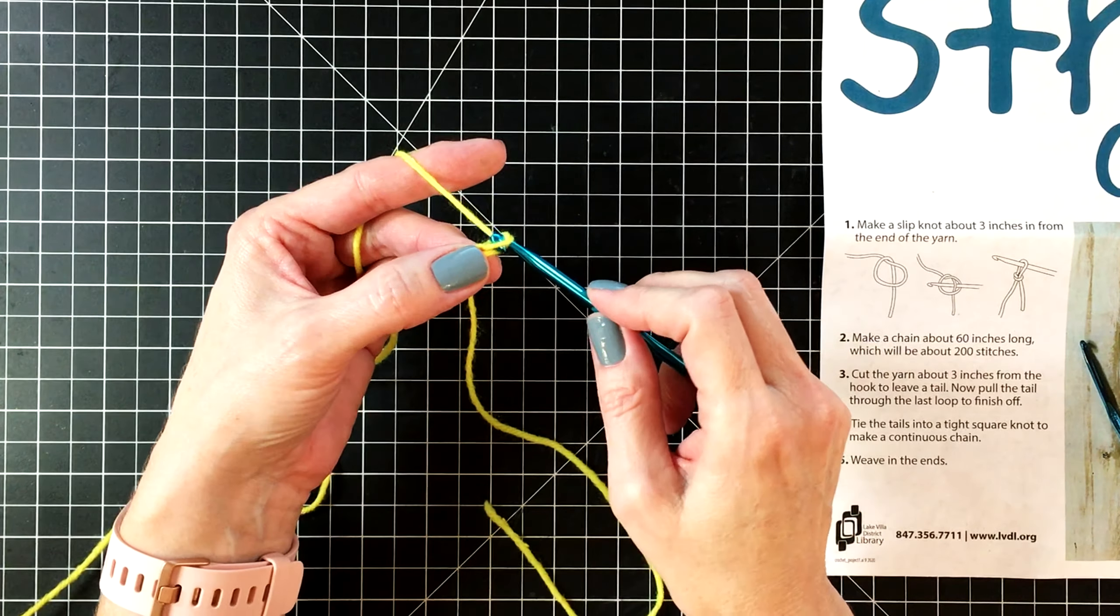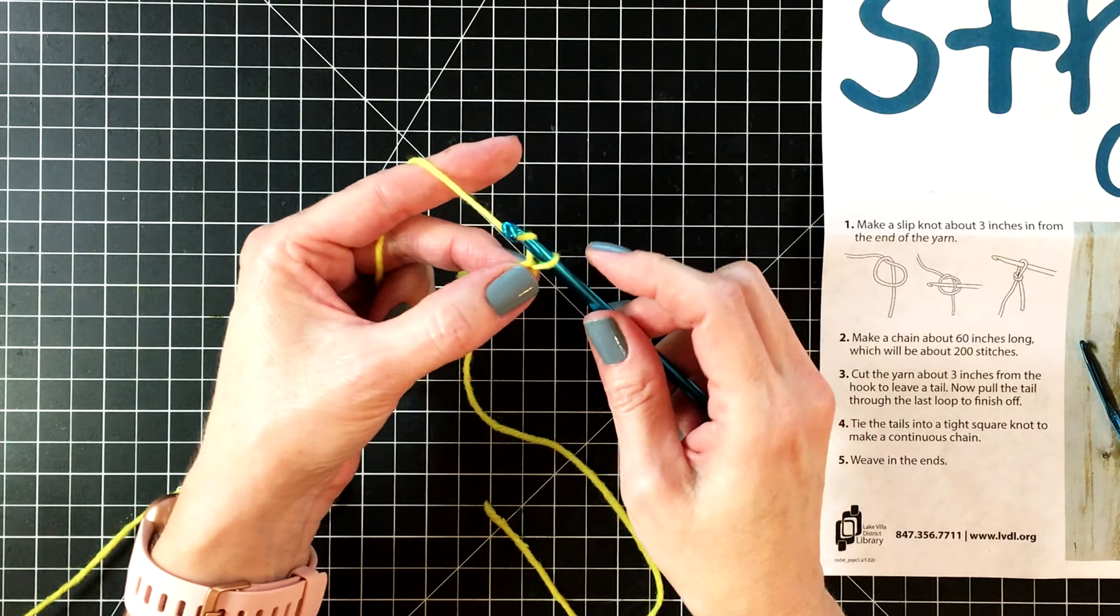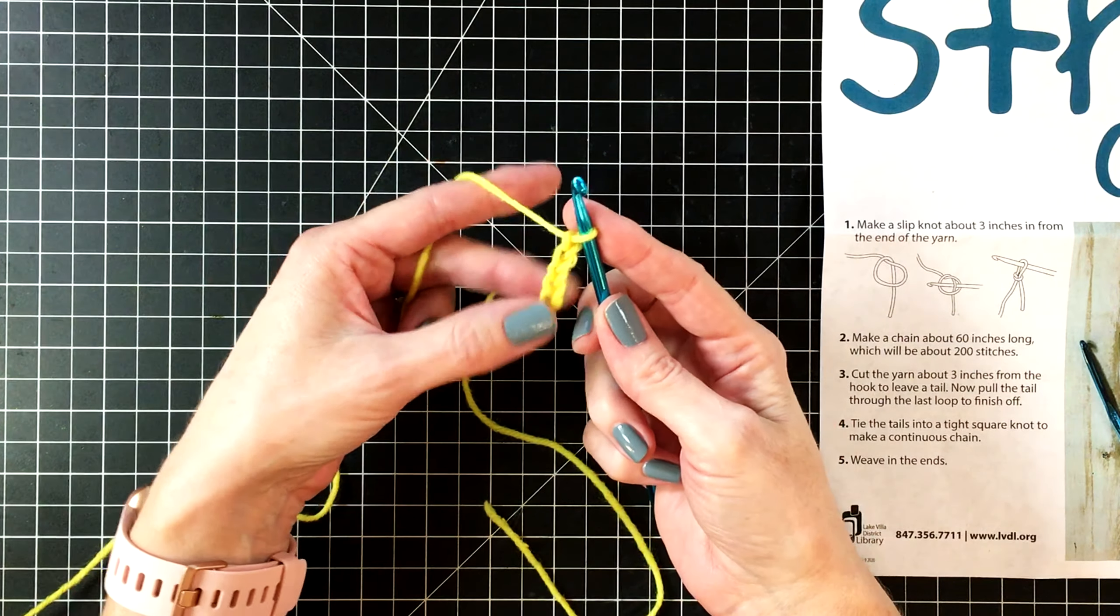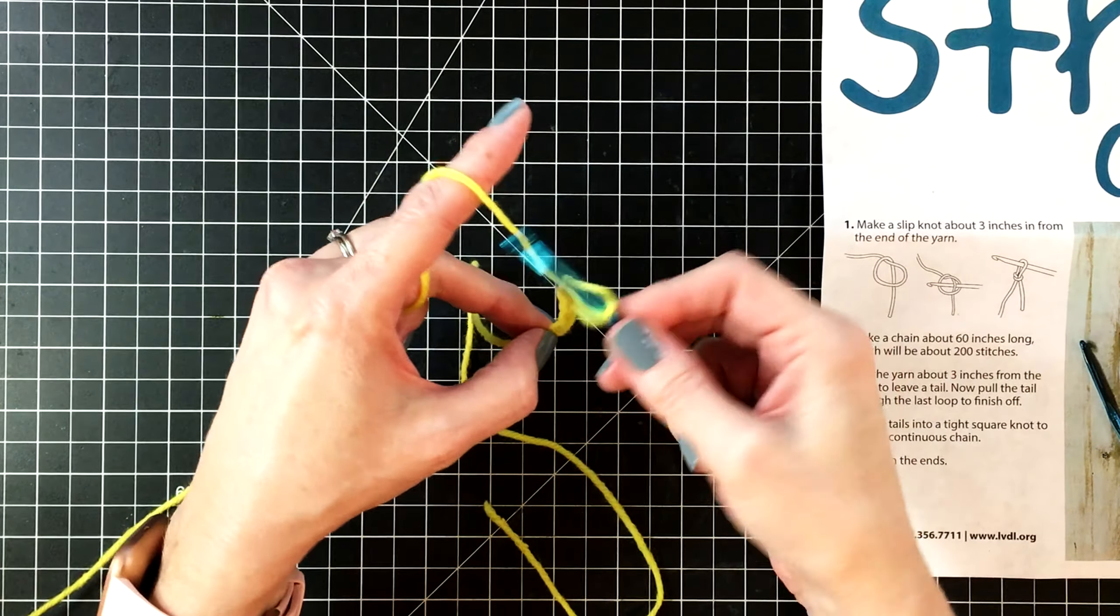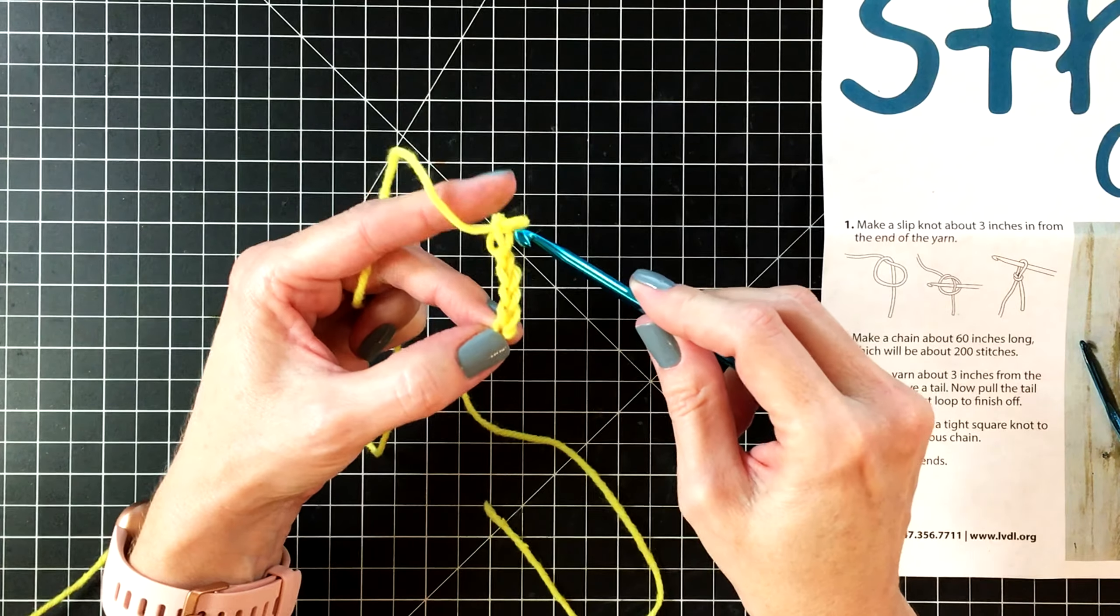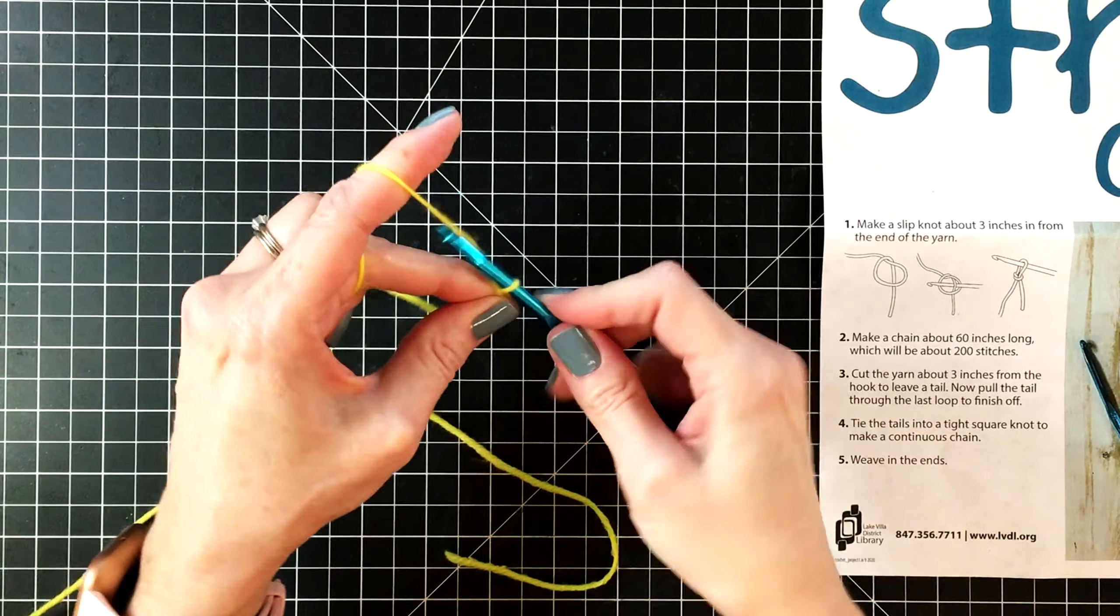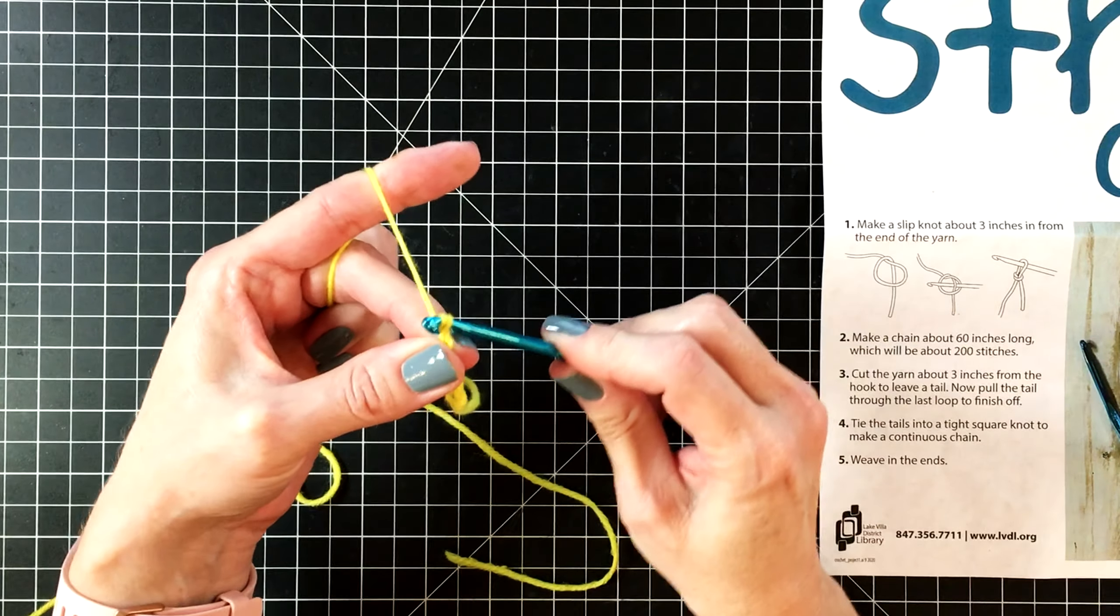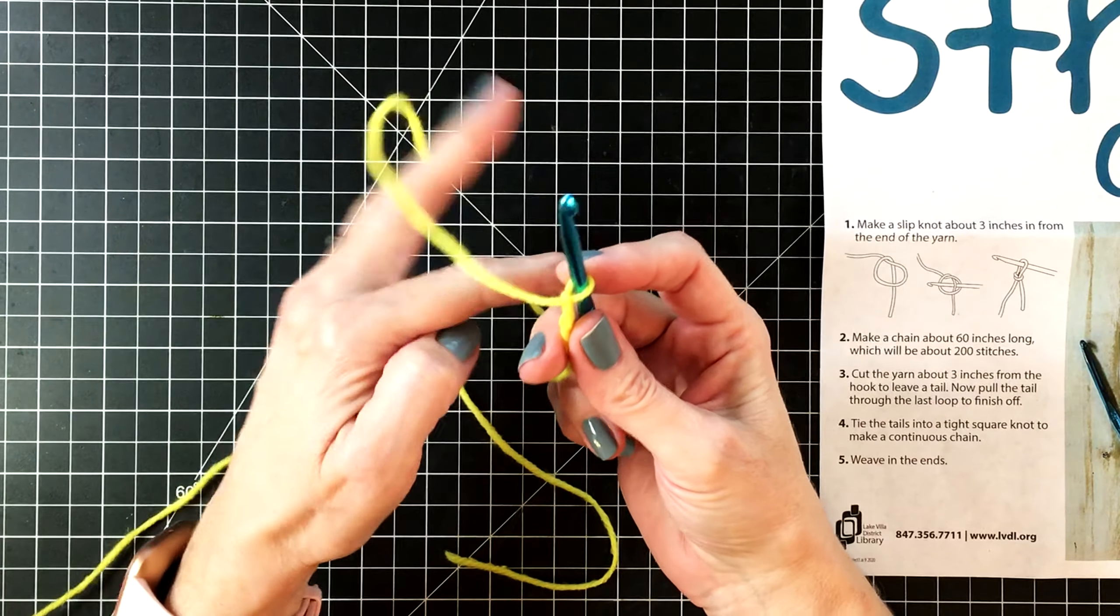And again, it's important to keep the slip knot loose but not too loose where you lose control over it. So if I were to pull the slip knot really wide and try to crochet, it's very difficult and awkward as you can see. And then if I have the slip knot too tight you're not going to be able to pull the yarn through the loop. It has to be just right and you'll get this as you practice.